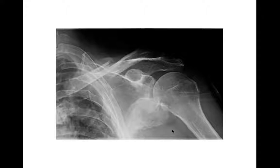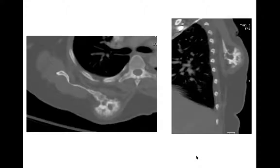Moving to strange lesions of the scapula. Here we see a sclerotic lesion arising from the scapula — this one turned out to be an osteosarcoma, a strange place for one but they can occur there. The fracture was incidental. Chondrosarcomas are lesions that can occur off the scapula and are not uncommon. Remember mets, multiple myeloma, and plasmacytoma. Osteochondromas are another lesion that can occur off the scapula.